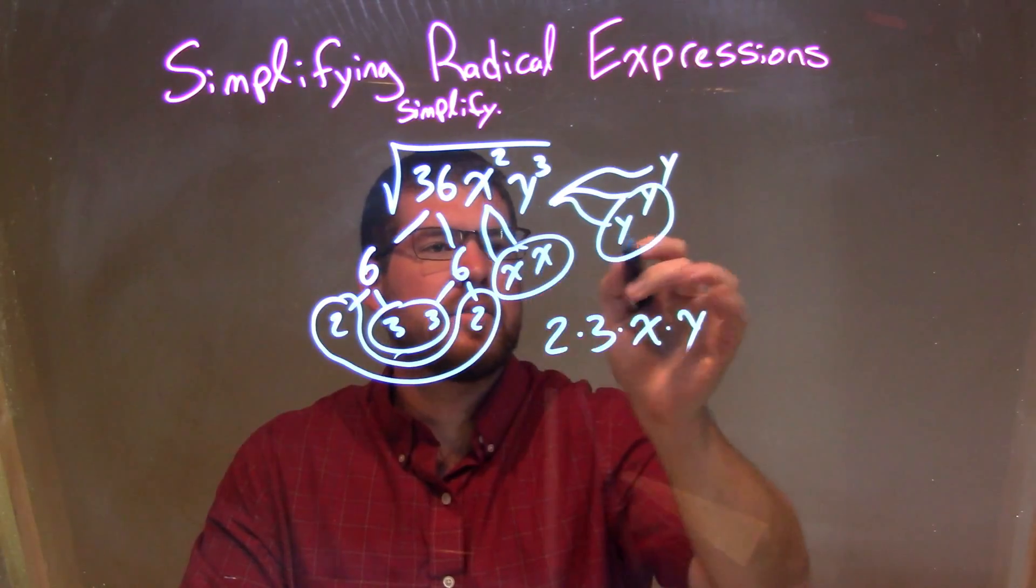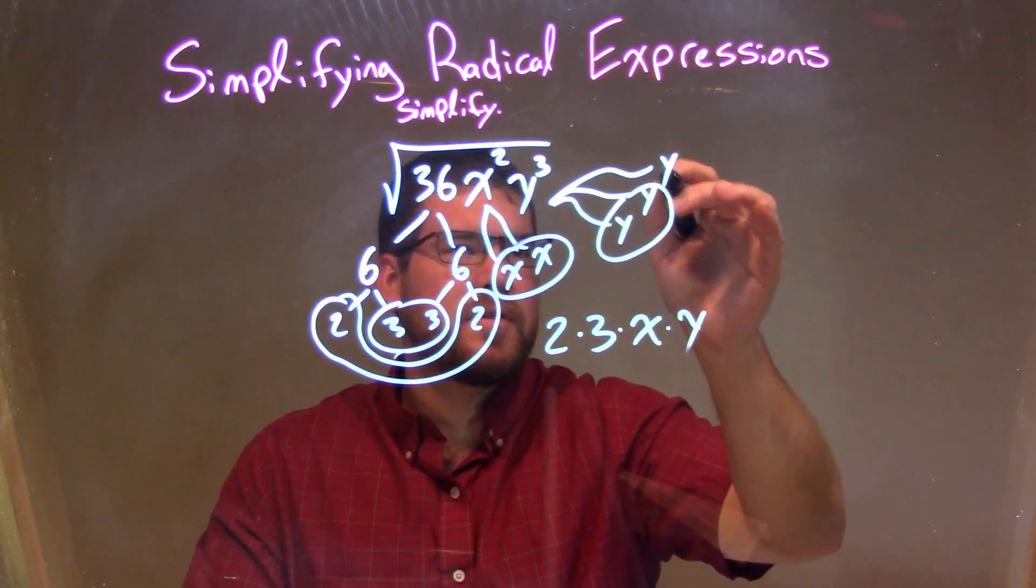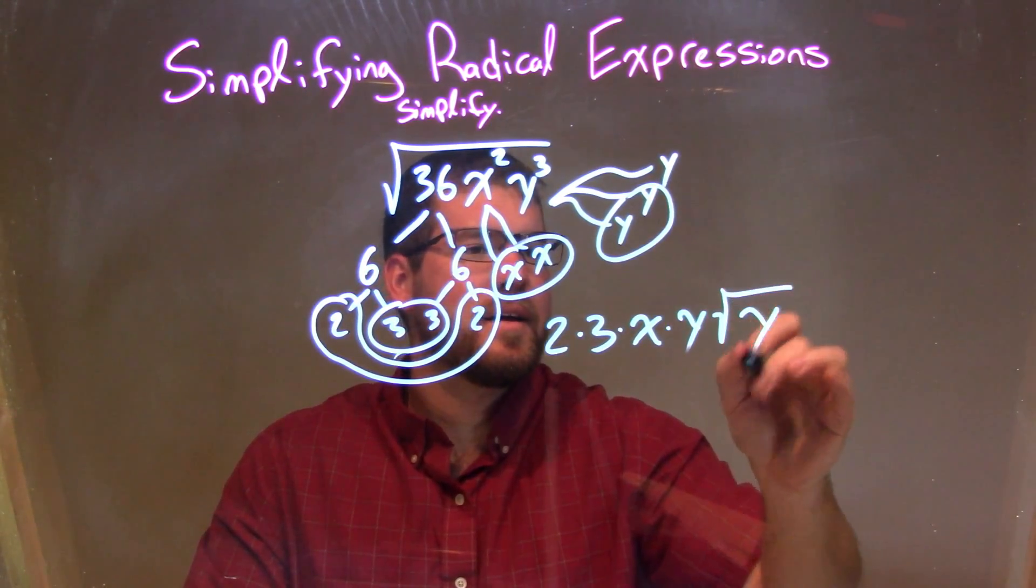So we have the 2s, the 3s, the xs, and the ys of pairs. What's left over is that one y stays inside the square root.